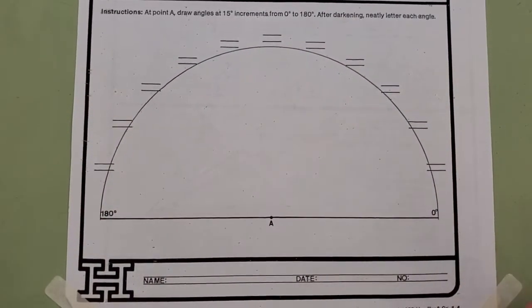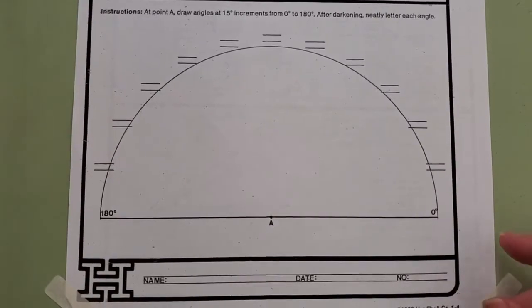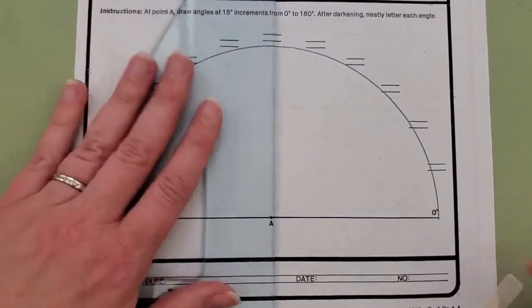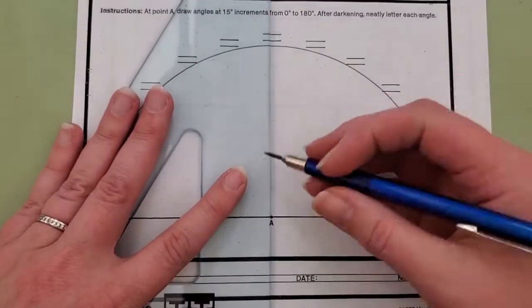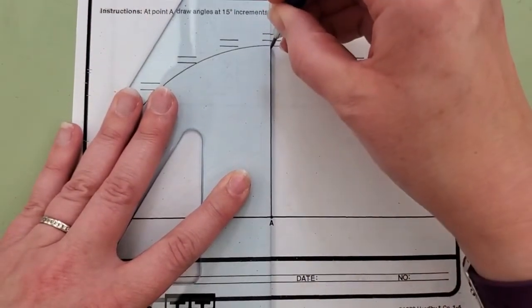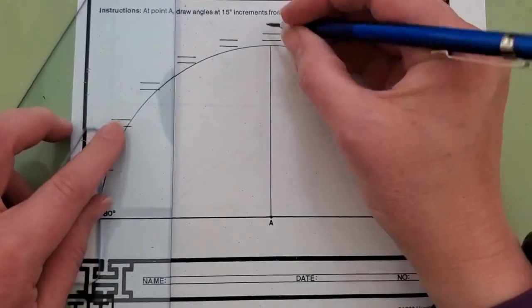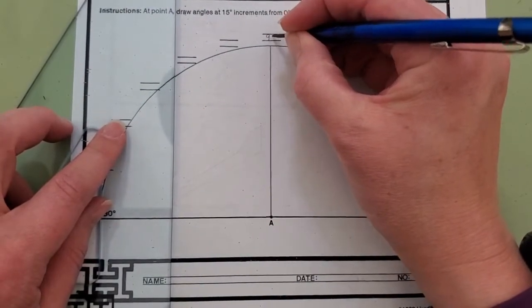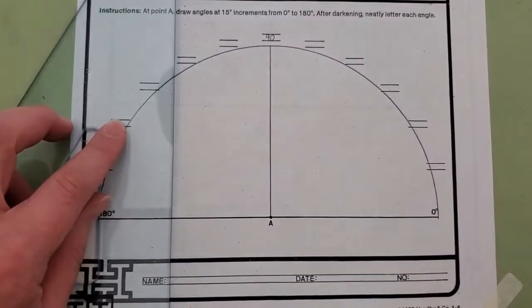All you're doing when you're creating these is using your two triangles to create specific angles. We all know that if we line up a right angle, we have a 90 degree angle.